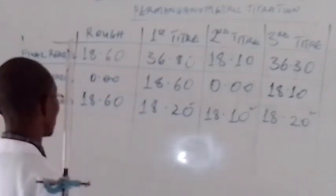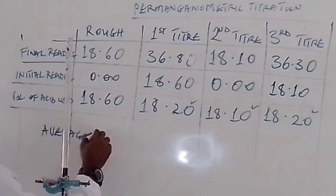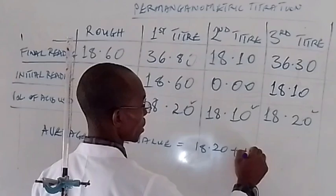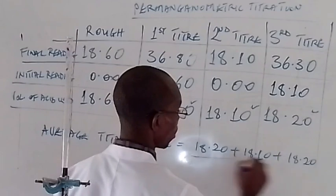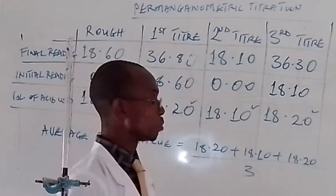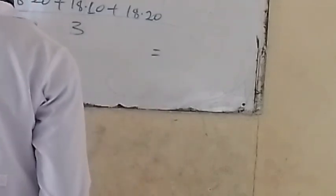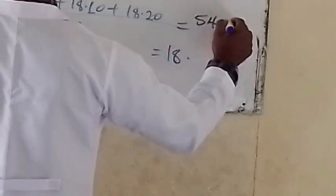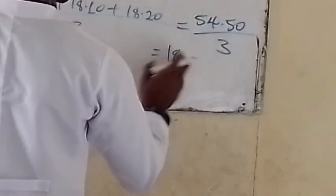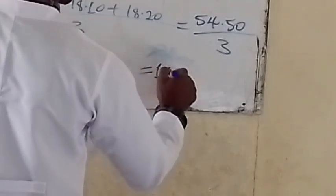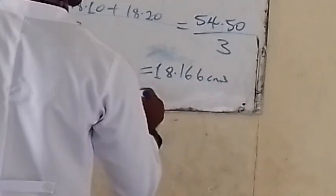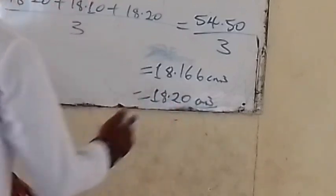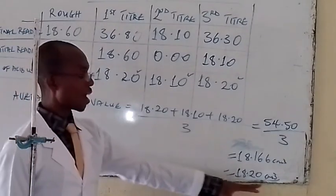Let us quickly calculate our average titre value. Average titre value equals (18.20 + 18.10 + 18.20) divided by 3. From here we get 54.50 divided by 3, which gives us 18.166 cm³. Approximated to 2 decimal places, we are having 18.20 cm³ as our average titre value.